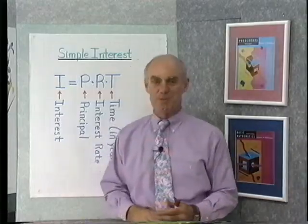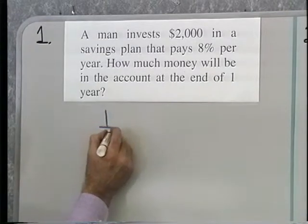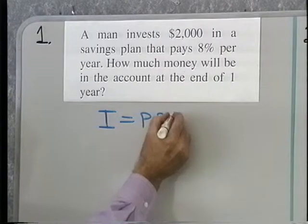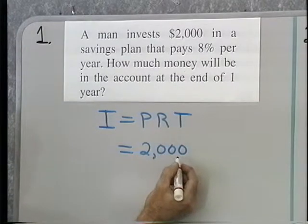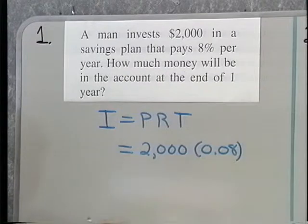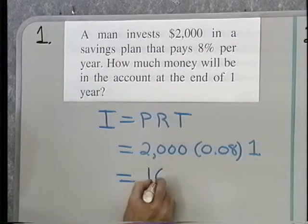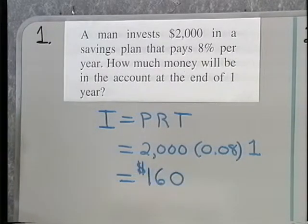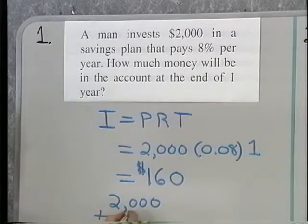Let's go to the board now and work some problems. A man invests $2,000 in a savings plan that pays 8% per year. How much money will be in the account at the end of one year? I is equal to P times R times T. The amount of interest will be the principal, $2,000, times the rate 8% — changed to a decimal — times the amount of time, which is one year. When I multiply 0.08 times 2,000, I end up with 160. So $160 is the amount of interest earned in one year. At the end of one year, the account has $2,000 plus $160, which adds up to $2,160.